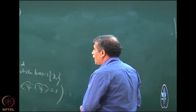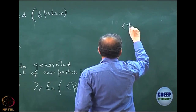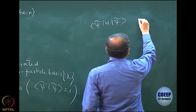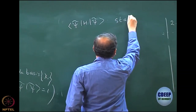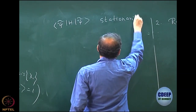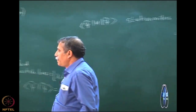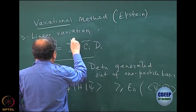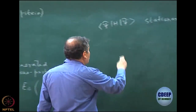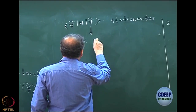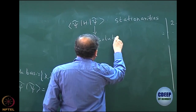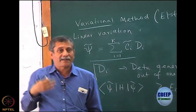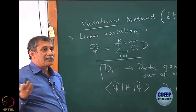If you do this calculation of psi tilde, H psi tilde — assuming it is normalized — and do a stationary calculation, analyzing the stationarities of psi tilde H psi tilde, then if this is a k-dimensional basis, first of all what I will get is k solutions. You will actually get an equation which, as I will show later, is a matrix equation in k-dimensional space.